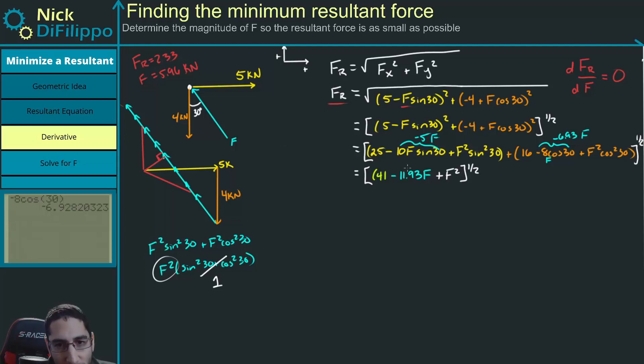All right. So now I want to take the derivative of this term. And the derivative isn't as straightforward as you might think it is. You need to do the chain rule because we do have this like pesky square root out here. So if we take the derivative, first we need to do the square root. So it's going to be one-half times everything in here stays the same. So 41 minus 11.93F using the chain rule plus F squared to the, well, this becomes subtract one from it. So it's minus one-half.